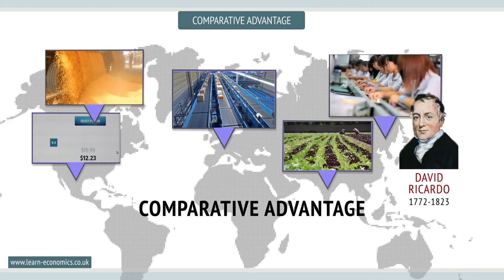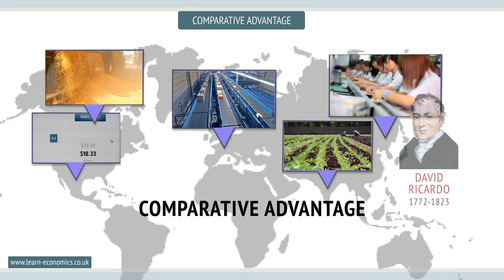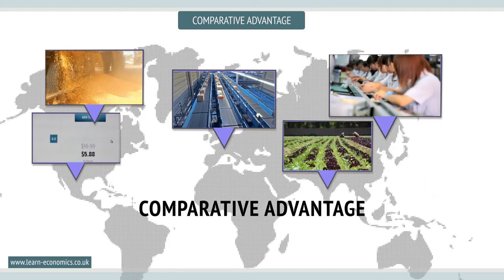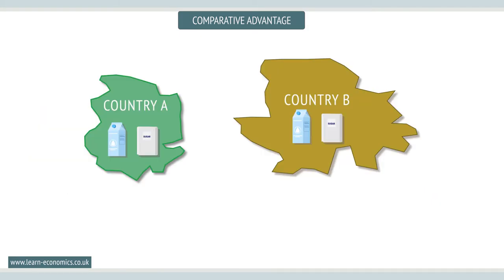Let's look at a simple example. Consider two countries producing only two goods: milk or sugar. Using all its resources, country A can produce 4 million litres of milk or 10 tonnes of sugar. Country B can produce 8 million litres of milk or 12 tonnes of sugar. We will assume that 1 million litres of milk is equal to 2 tonnes of sugar in terms of value — let's say each is worth $200,000.